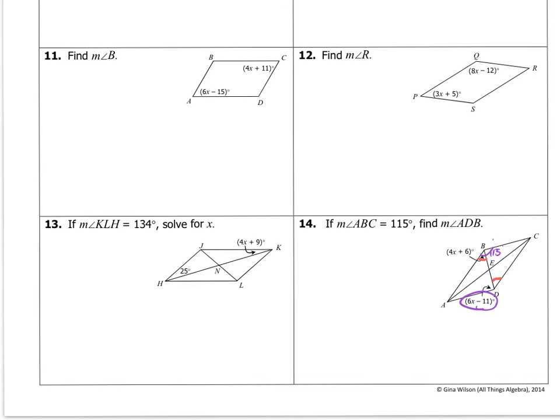And I also know that 4x plus 6, so that angle plus 6x minus 11, I add it up together, they should equal the opposite angle which is 115 degrees. So if I set it up like that, my x will come out to be 12. After you finish your algebra, then you plug it back in.